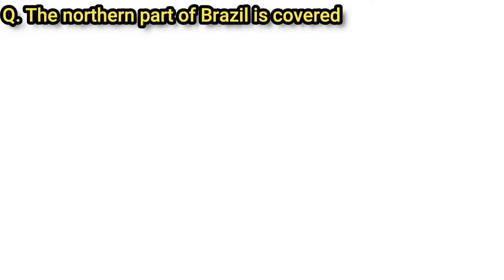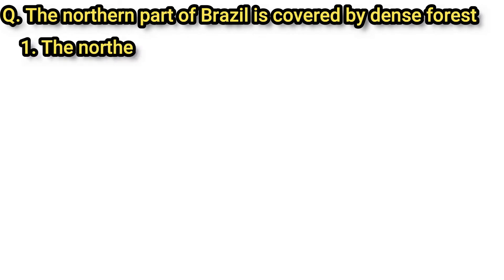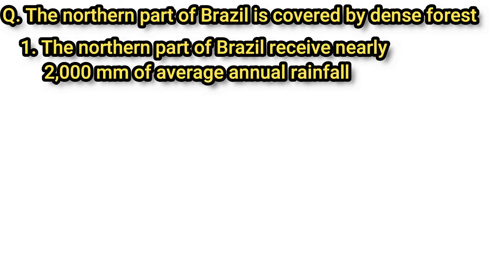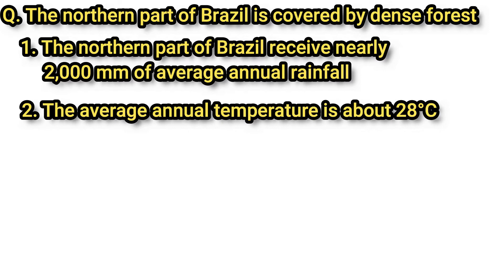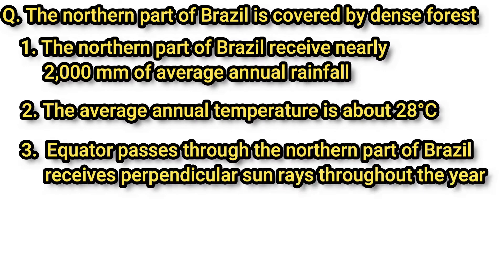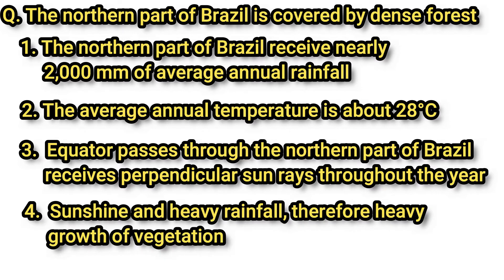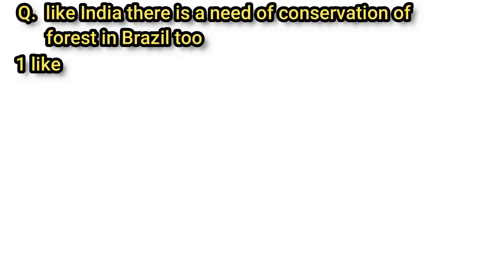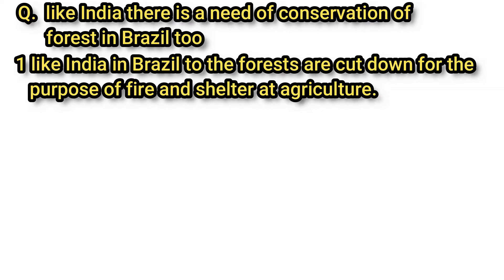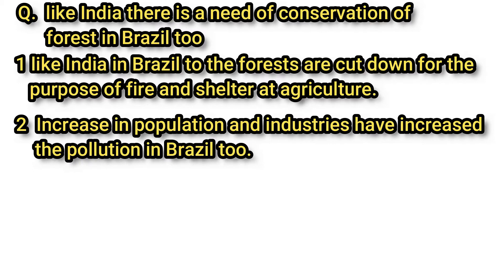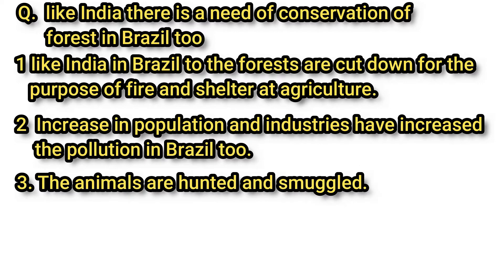The rainforests of Brazil are called the lungs of the world. The northern part of Brazil receives nearly 2000 mm of average annual rainfall and an average annual temperature of nearly 28 degrees Celsius. The equator passes through this region, providing perpendicular sun rays almost throughout the year, resulting in heavy vegetation growth. However, due to increasing population, more land is cleared for shelter, agriculture, and firewood, and the number of industries has increased, raising pollution levels.